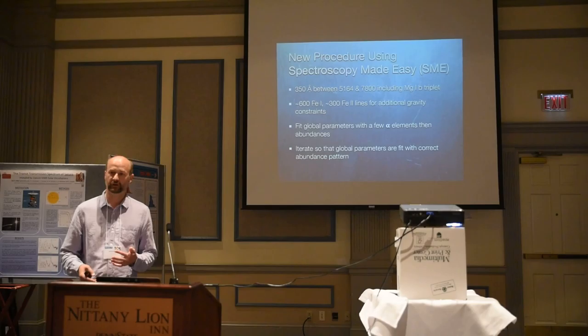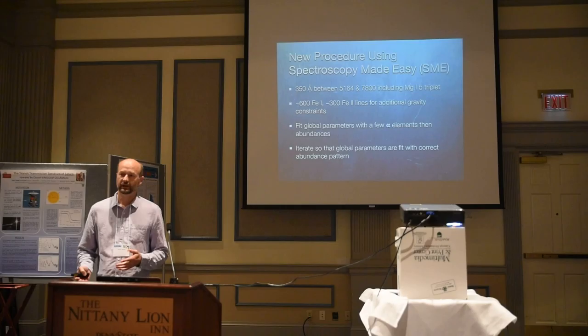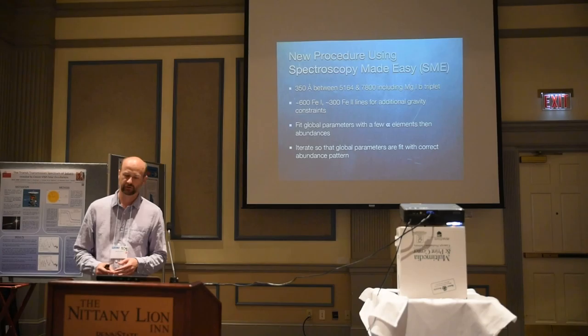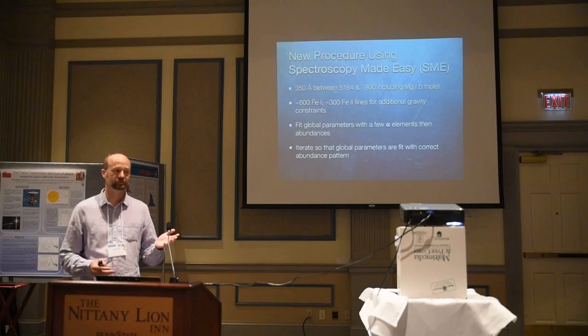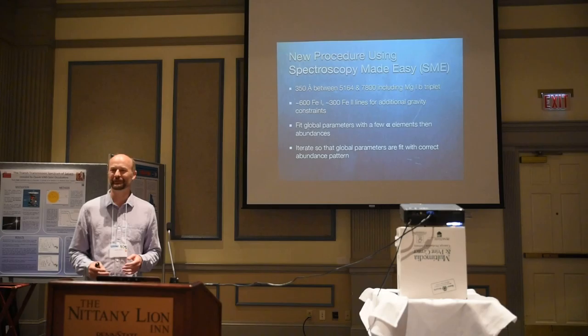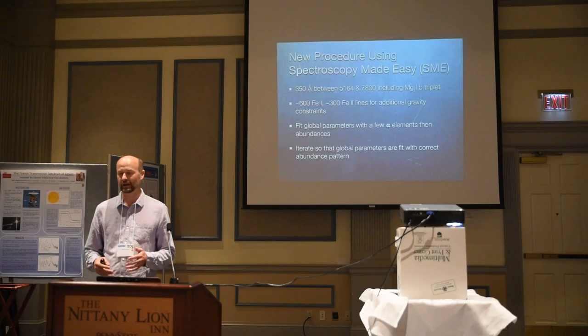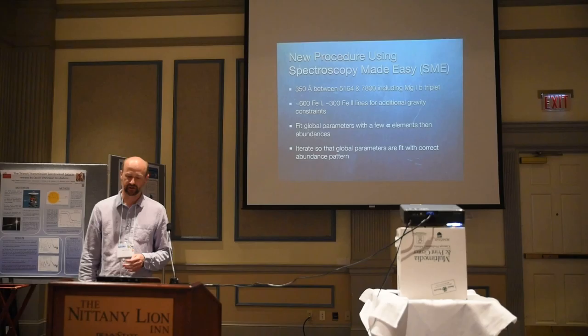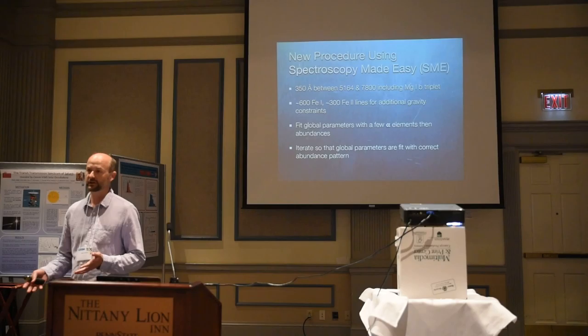I've developed with Deborah Fischer, Sarbani Basu, Jeff Valenti, and Nicolette a new procedure using Spectroscopy Made Easy that is able to greatly improve the surface gravities we get for stars. We've expanded the wavelength coverage — not quite the full spectrum, but 350 angstroms — and we're including around 7,000 atomic and molecular lines, in addition to the magnesium B triplet, which has been the traditional way to get surface gravity.